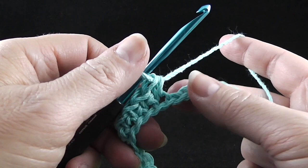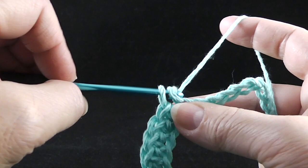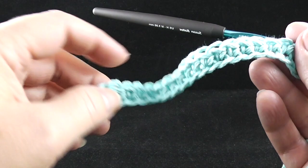Stick that hook in, pull up a loop, yarn over and pull through two. Yarn in, pull up a loop, yarn over the back and pull through two.